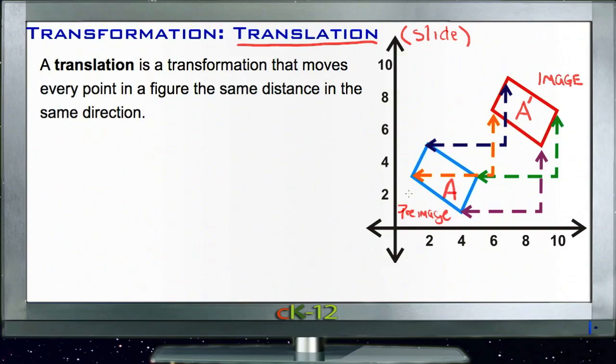To identify what's happened to a figure, specifically with a slide, we talk about what happens to any given point on the figure and its corresponding point on the image afterward. So from the pre-image to the image, for instance, we start with this location right here. This location looks like (1, 3).